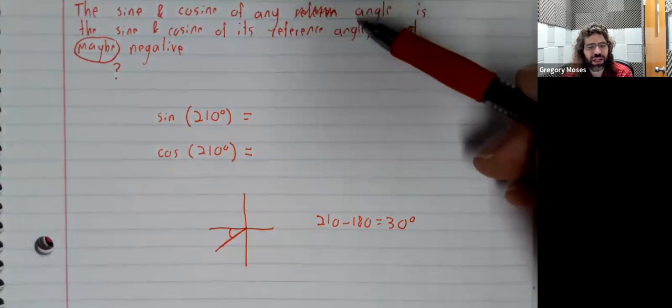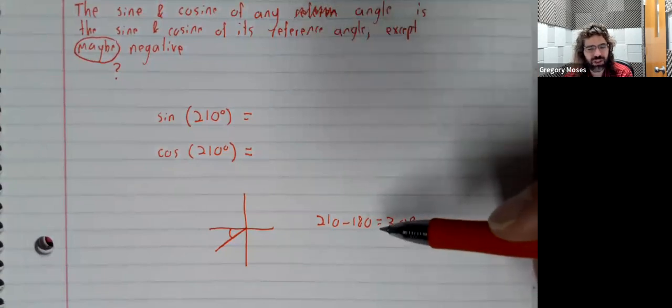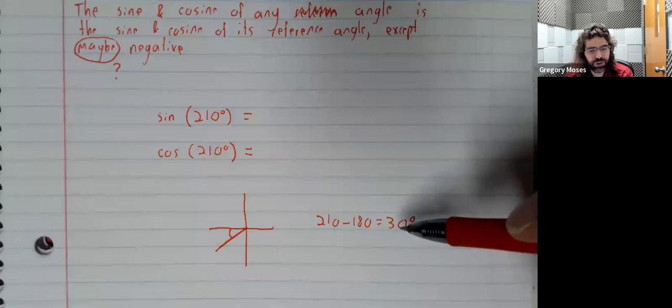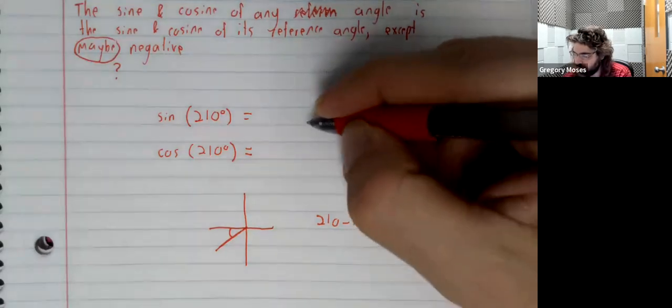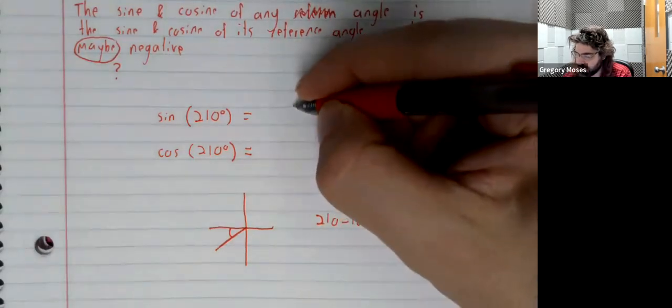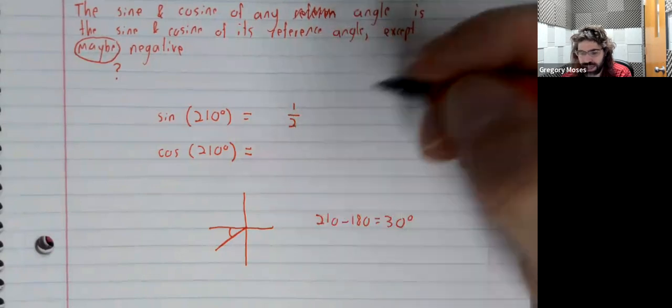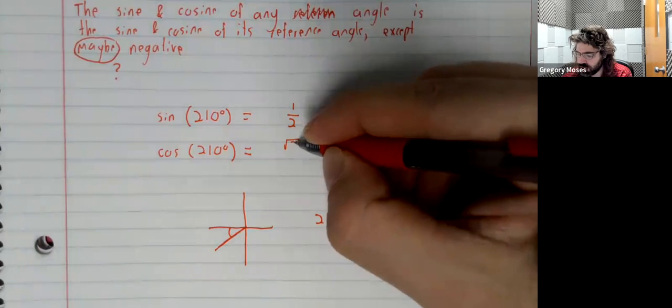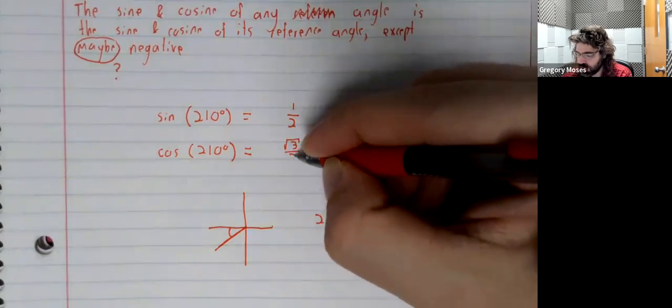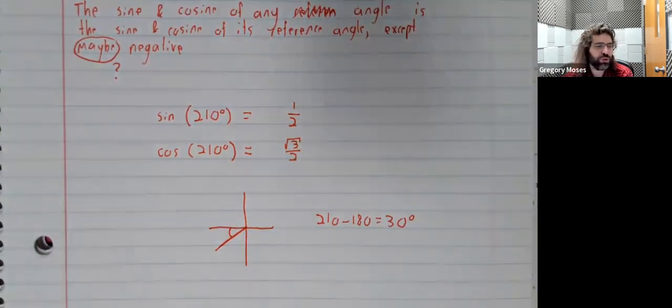the sine and the cosine of an angle should be the sine and the cosine of the reference angle, except maybe negative. The sine of 30 degrees is one half. The cosine of 30 degrees is the square root of 3 over 2.